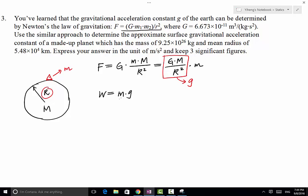So we're going to use the similar approach to determine the surface gravitational acceleration of a made-up planet. It has mass of this much and a mean radius of this much, therefore g again equals to capital G times capital M over R squared.